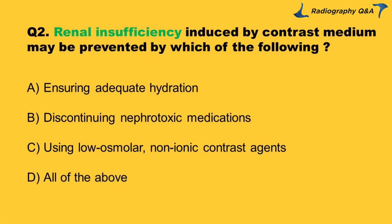Question 2: Renal insufficiency induced by contrast medium may be prevented by which of the following? Option A: ensuring adequate hydration. Option B: discontinuing nephrotoxic medications. Option C: using low osmolar non-ionic contrast agents. Option D: all of the above. Right answer is Option D.